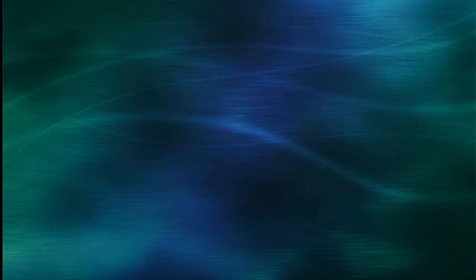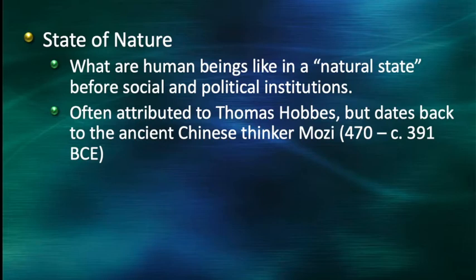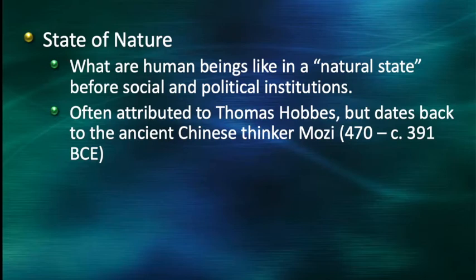Part three of this lecture is going to talk about Hobbes on the state of nature. This is what many attribute to Hobbes inventing — the thought experiment of what human beings would be like in a natural state prior to any social relations or political institutions. What were the first humans really like? While this is often credited to Hobbes, it actually dates back to the ancient Chinese thinker Mozi, who lived between 470 and 391 BCE, who also developed a similar thought experiment. What Hobbes is trying to do is figure out what is essentially human, what are the essential behaviors of human beings, and then how can we ground political authority on that.